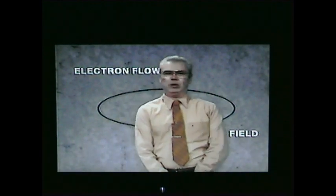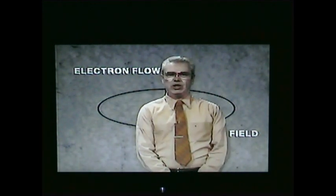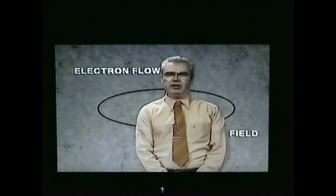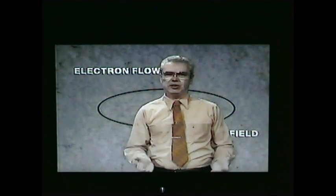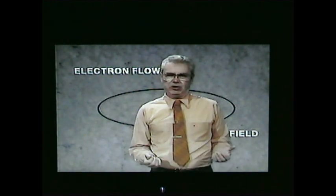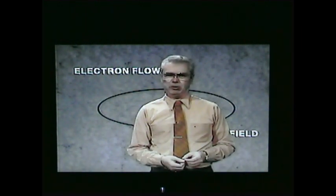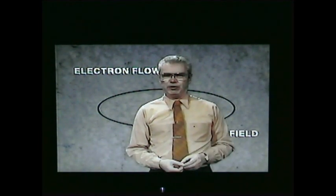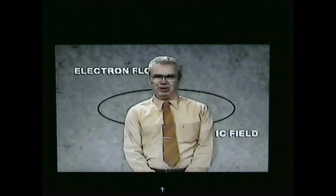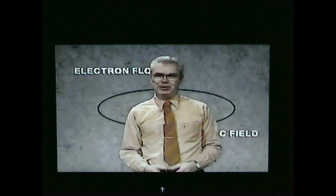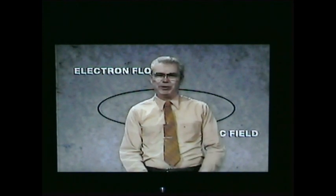This goes all the way back to 1864. James Maxwell, a Scottish physicist, derived a set of mathematical equations that predicted the existence of these electromagnetic waves. He predicted they could be reflected, that they would travel at the speed of light, and the loss these waves would have with distance. A lot of scientists at the time didn't believe these equations — invisible waves that travel through buildings and people at the speed of light? Fantastic. It was 20 years before anyone had the equipment to generate a radio wave to prove he was right.